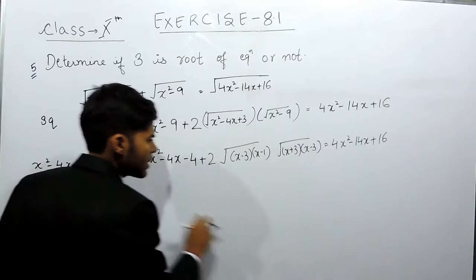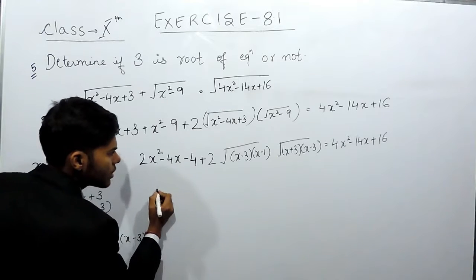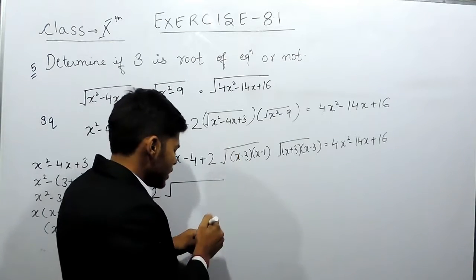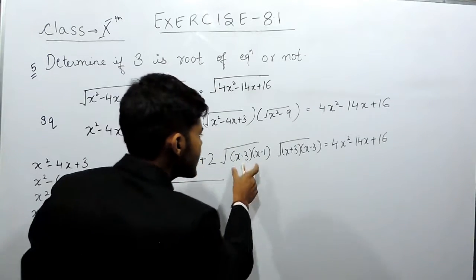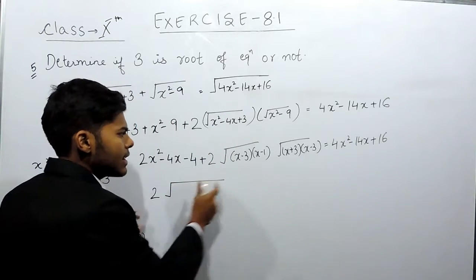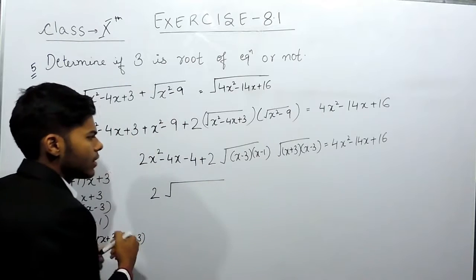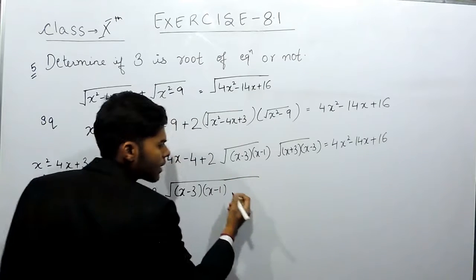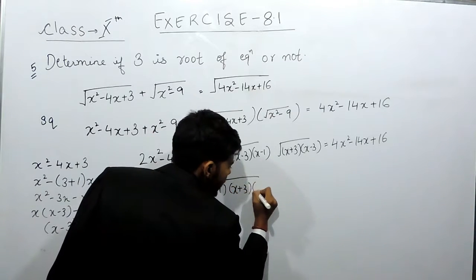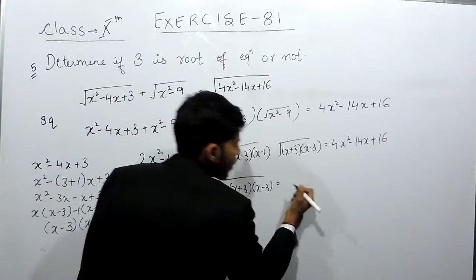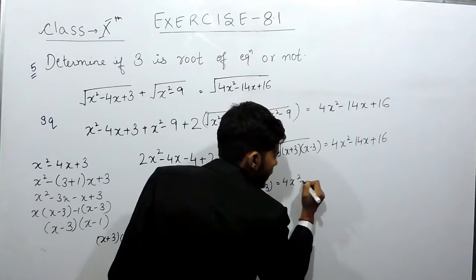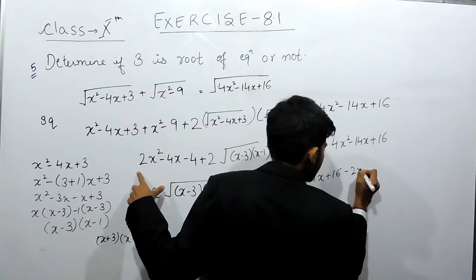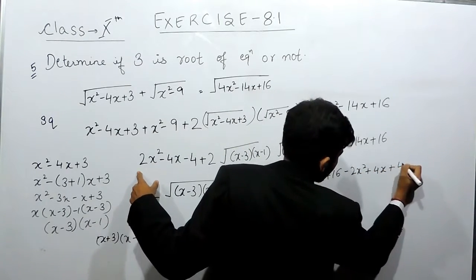Now we will shift these terms to the other side. Here the root remains as it is and the terms inside the root get multiplied. So this will be 2 times under root of (x minus 3)(x minus 1)(x plus 3)(x minus 3), and on this side it will be 4x² minus 14x plus 16 minus 2x² plus 4x plus 4.